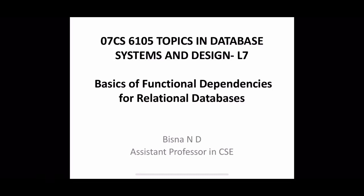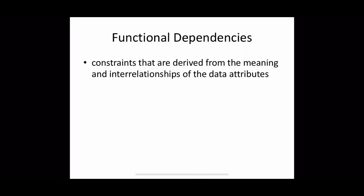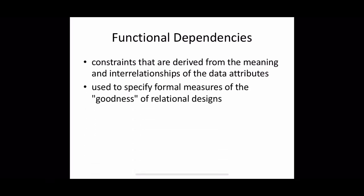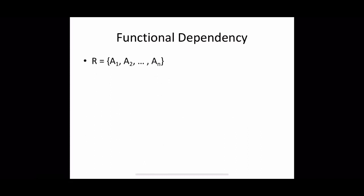We will also see how this concept can be used to define normal forms for relational schemas. Functional dependencies are constraints derived from the meaning and interrelationships of the data attributes. They are used to specify formal measures of the goodness of relational design, and they are constraints between two sets of attributes.